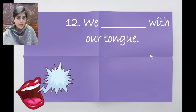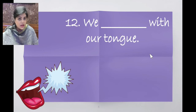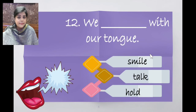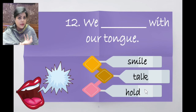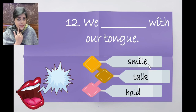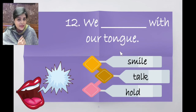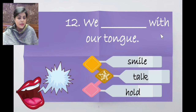We dash with our tongue. Options: we smile with our tongue, we talk with our tongue, we hold with our tongue. We can't hold with our tongue, and we smile with our lips, not our tongue. So the only correct option is talk. We talk with our tongue.